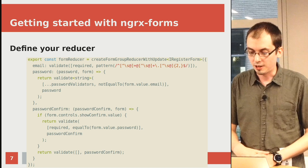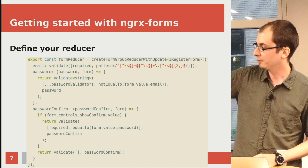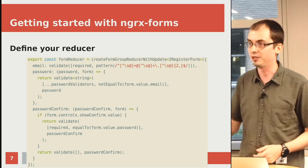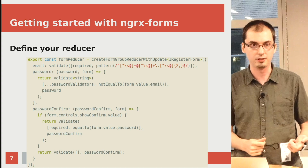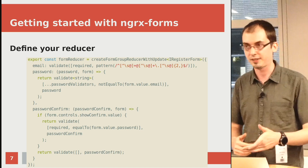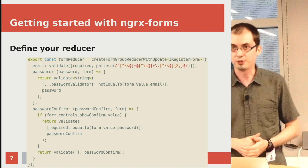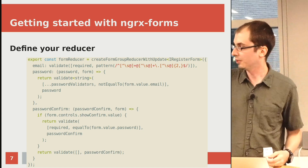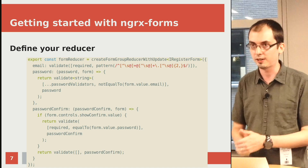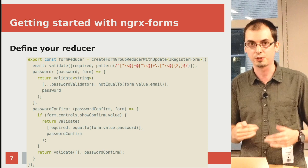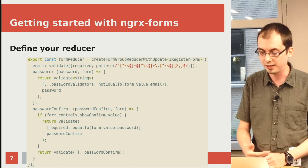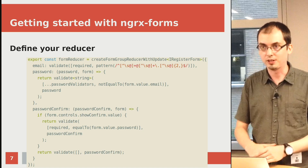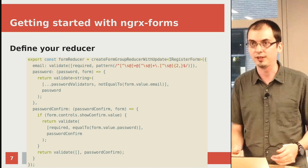Next we define our actual reducer. This is a pretty long function, but it's actually all validation. We're going to use `createFormGroupReducerWithUpdate` — that's a shortcut function. You don't have to use this; you could just define a reducer, look at your action and existing state, and modify it as needed. But this shortcut, defined without extra options, creates all of it for you in one line. The extra stuff are options for validation logic that also comes with the library — including required validation, regex, and making sure the password and password confirm match. If not, it raises a validation error.